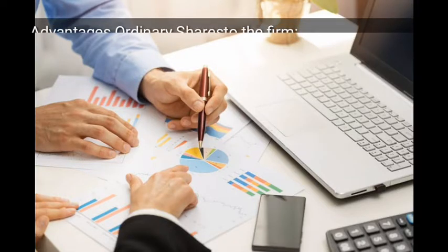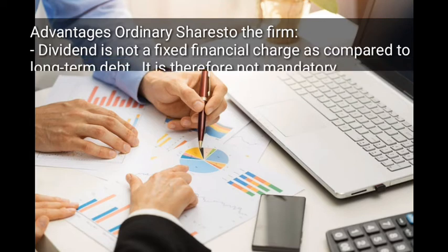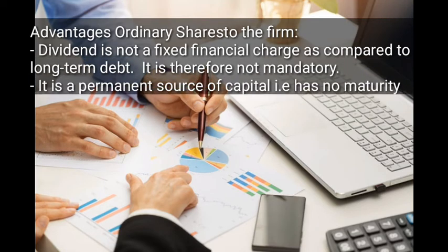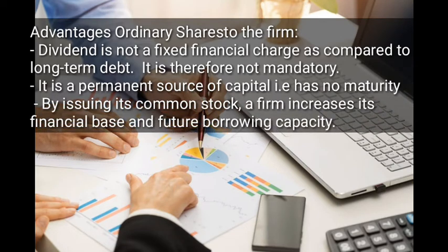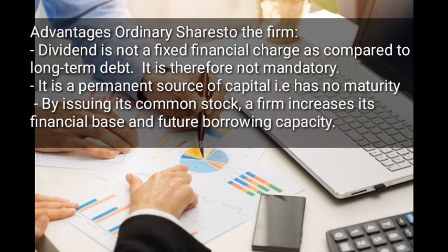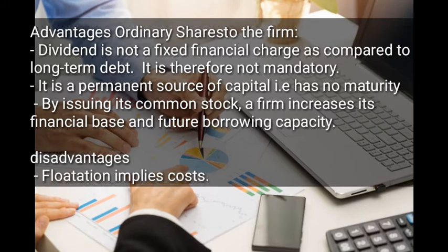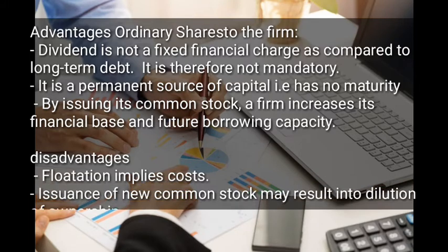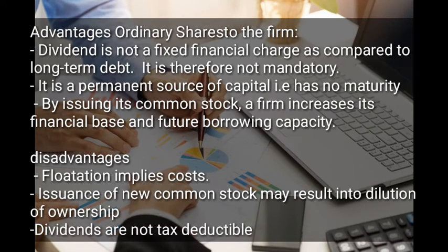Advantages of ordinary shares or common stock to the firm: the first one is that dividends are not a fixed financial charge, as compared to long-term debt. Therefore it's not mandatory. Ordinary shareholders are paid when the business makes profits, and when the business doesn't make profits it's not mandatory that they are paid. So it does not have a fixed financial charge to the firm. It's a permanent source of capital and by issuing common stock a firm increases its financial base.